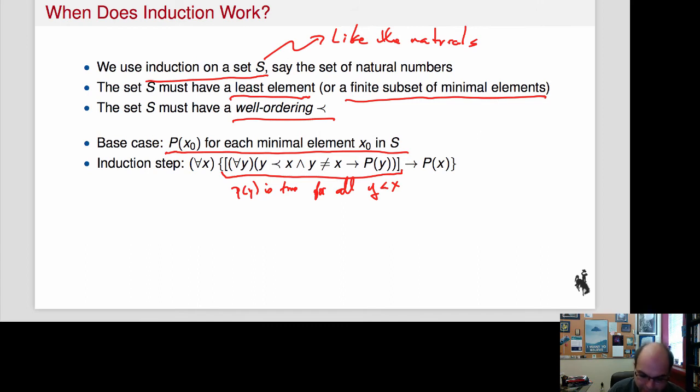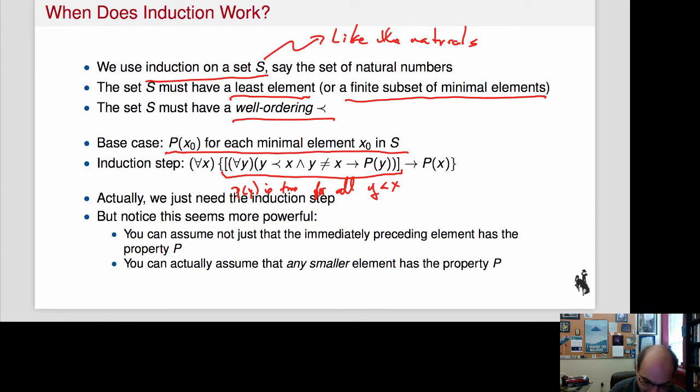A couple of quick observations here. Because that's for all y that are less than x, imagine that you're at a least element like 0. This is supposed to be true for all y less than 0. Well, there aren't any, so it doesn't help me. So in order for this actually to be true, P of 0 has to be true in its own right. Because it is the case that all smaller y, P of y, is true. There are no smaller y. So for all empty set is always true. So that means that P of 0 has to be true in its own right, which means that I don't actually need the base case. But that's just there to make us feel more comfortable that that's the induction that's happening.